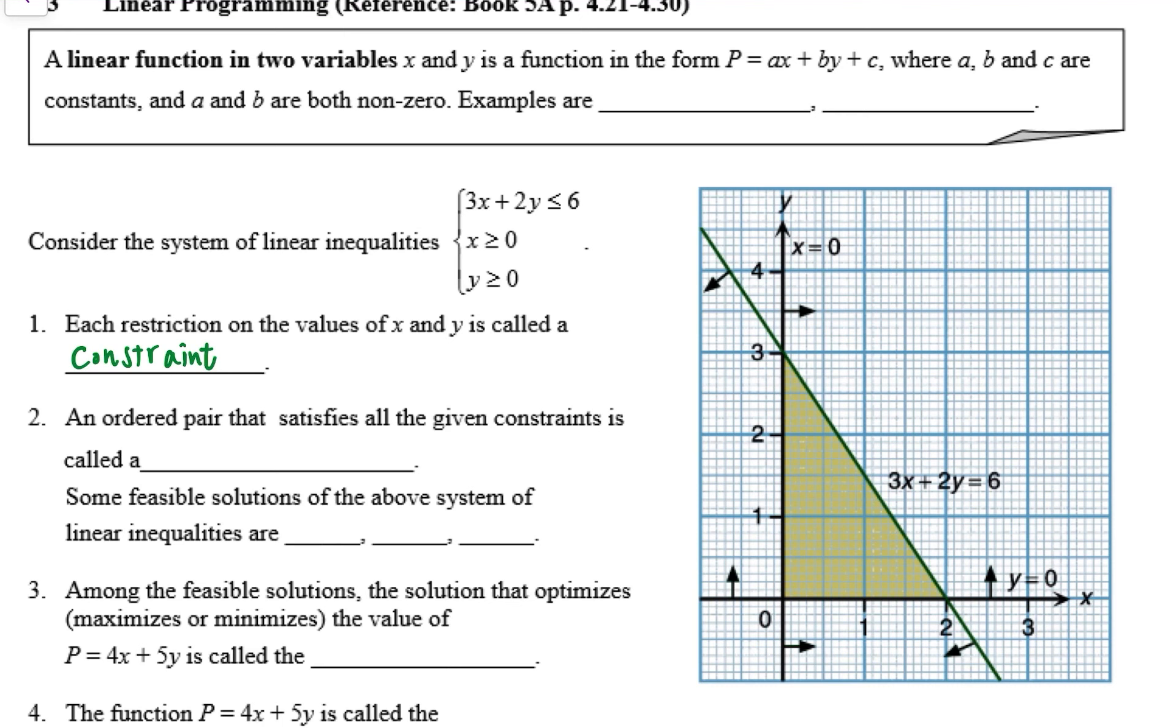We have learned how to solve the system of linear inequalities. So an ordered pair that satisfies all the given constraints is called a feasible solution in linear programming.